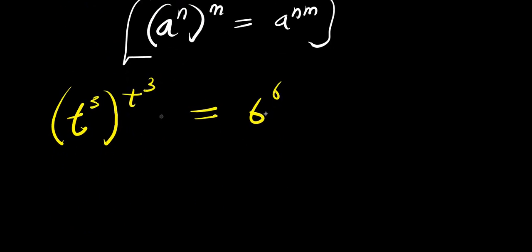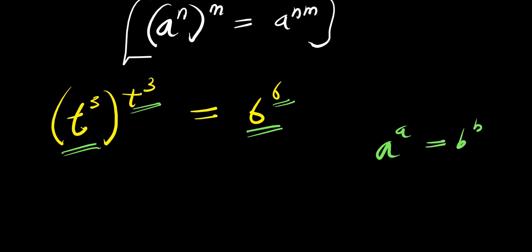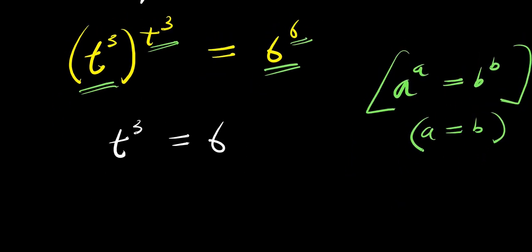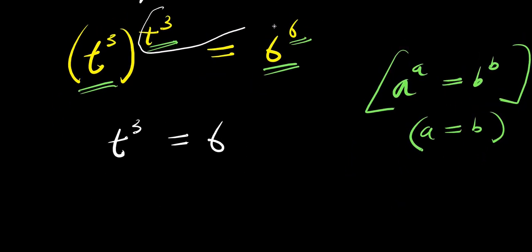Now, if you observe, the base and exponent on the left are the same, and the base and exponent on the right are also the same. This can be likened to: if a to the power of a equals b to the power of b, then a equals b. So we simply compare and have t power 3 equals 6.